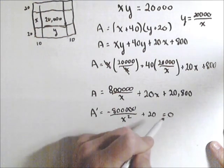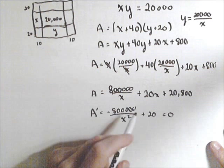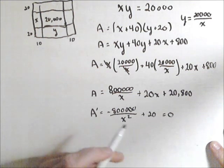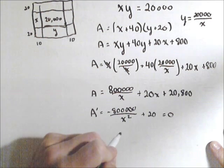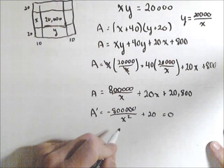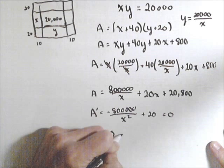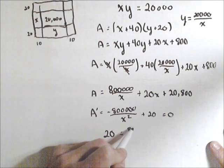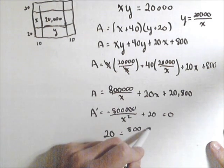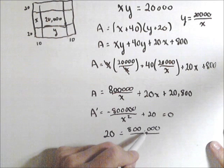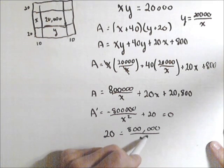So, checking for critical points, I'm going to set this to 0. And what I want to do is I'm going to add this across. So I'm going to add 800,000 over x squared to both sides. So I'm going to end up with 20 equals 800,000 over x squared.